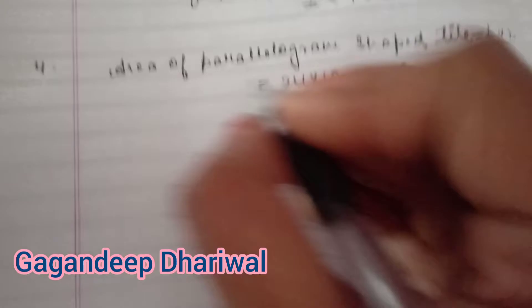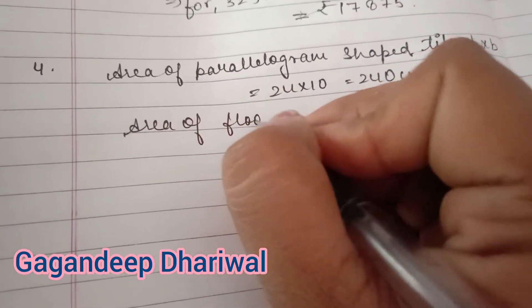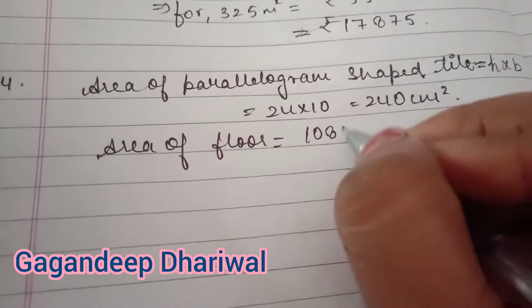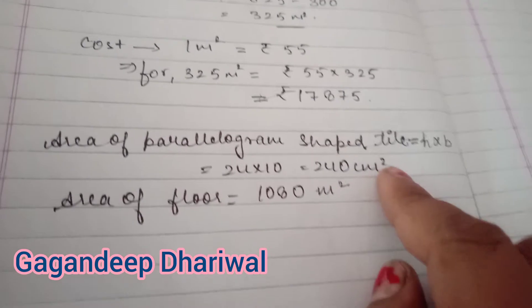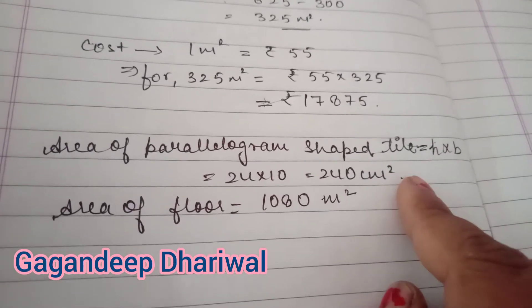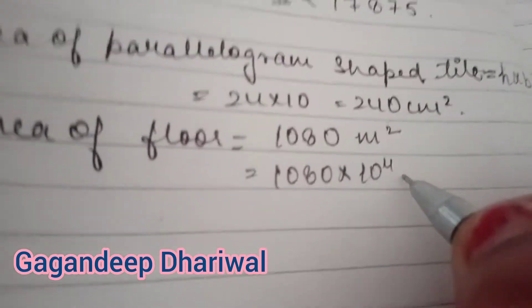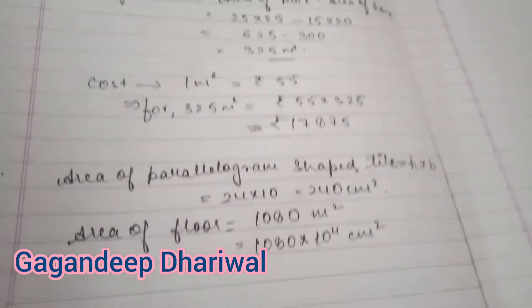The area of the floor is given as 1080 m². Since the area of the tile is in cm² and the floor area is in m², we need to make the units the same. Converting, 1080 m² becomes 1080 × 10⁴ cm².